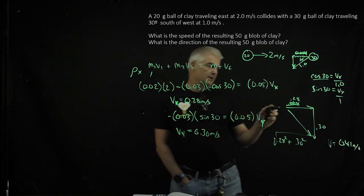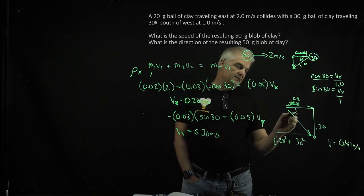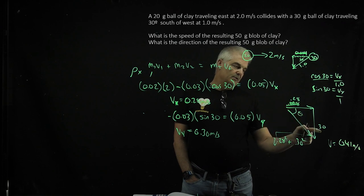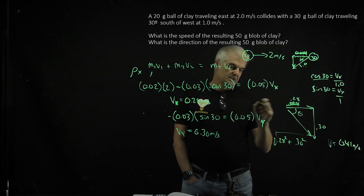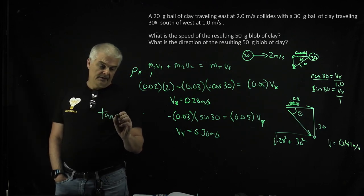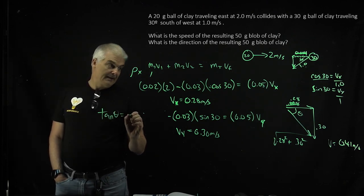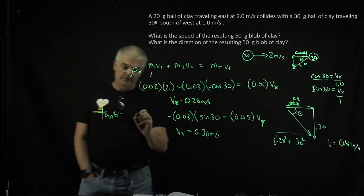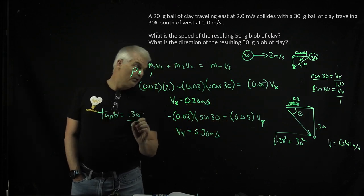What's the direction? I'm trying to find this angle. If I know this is the opposite and this is the adjacent, I can say tan θ = opposite / adjacent. The opposite is 0.30 over 0.28.